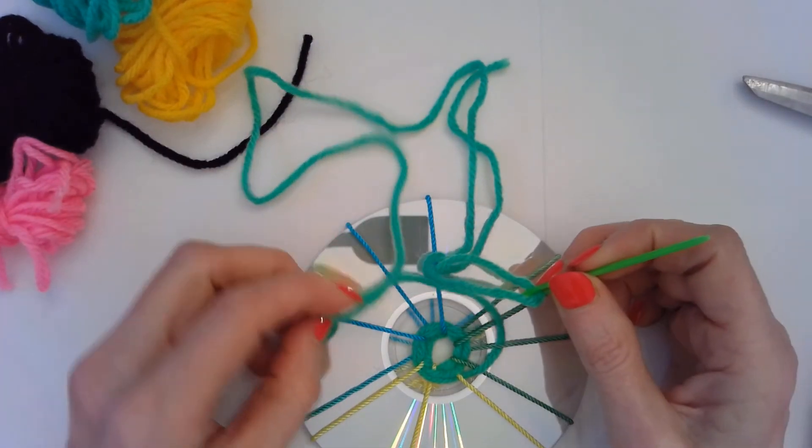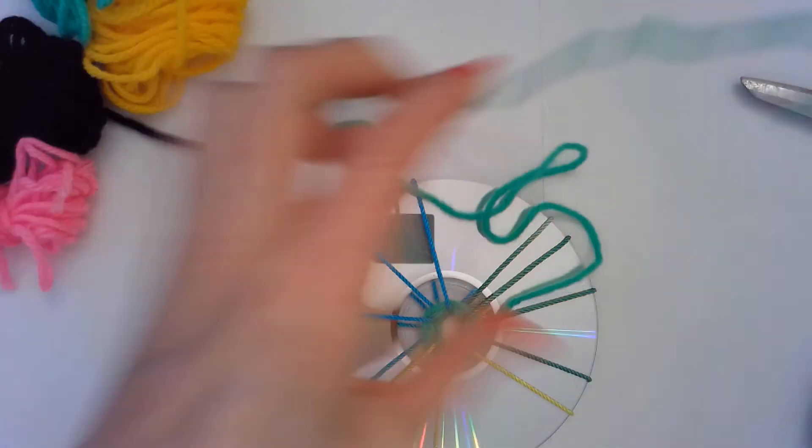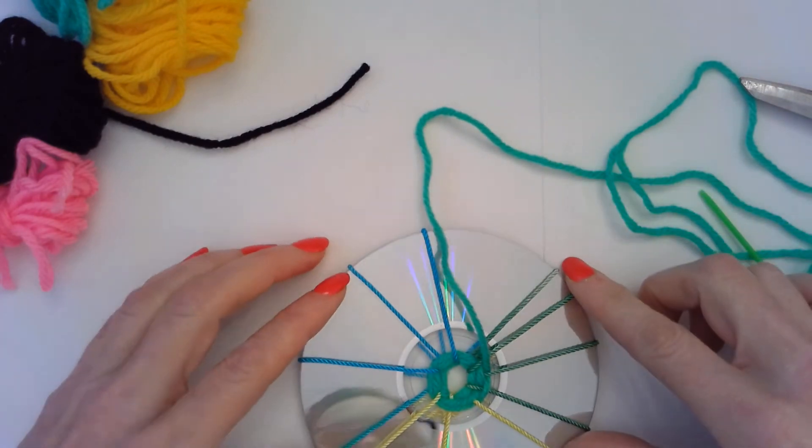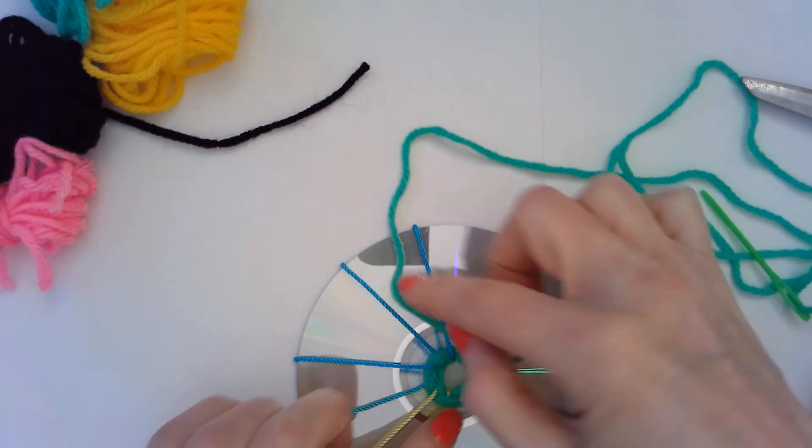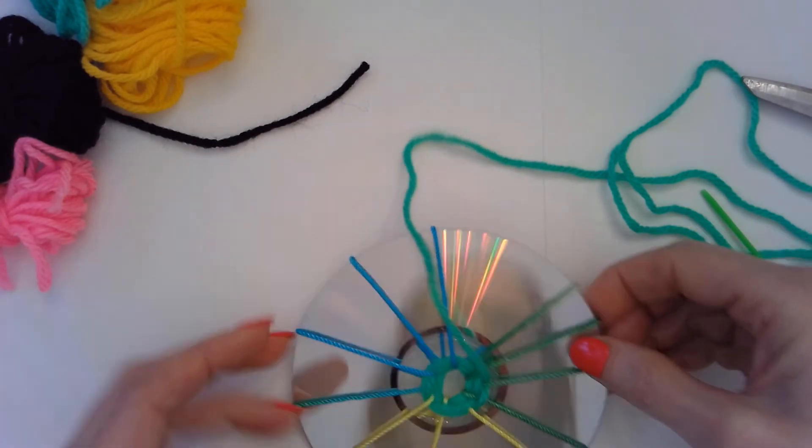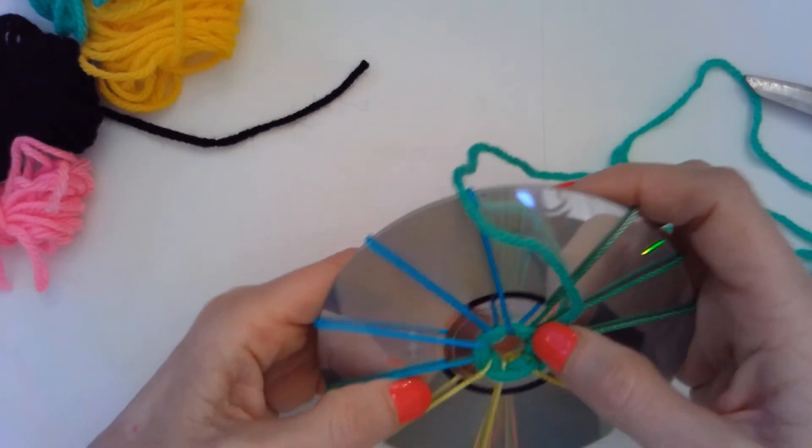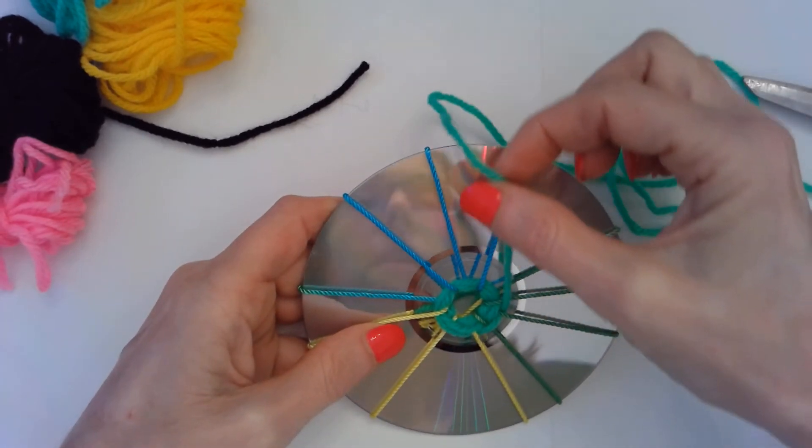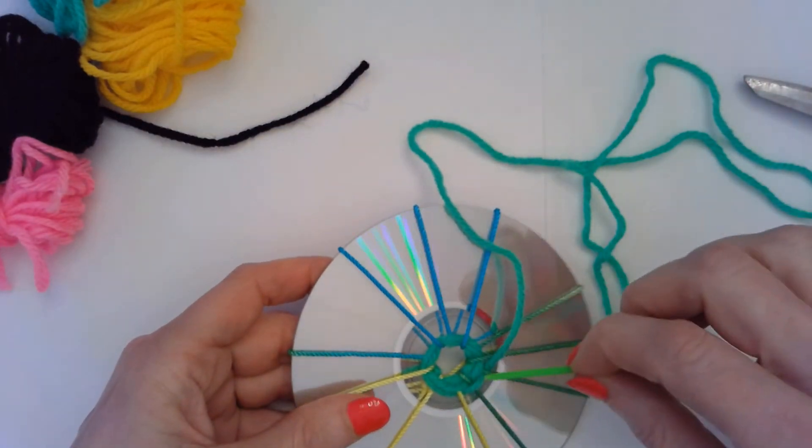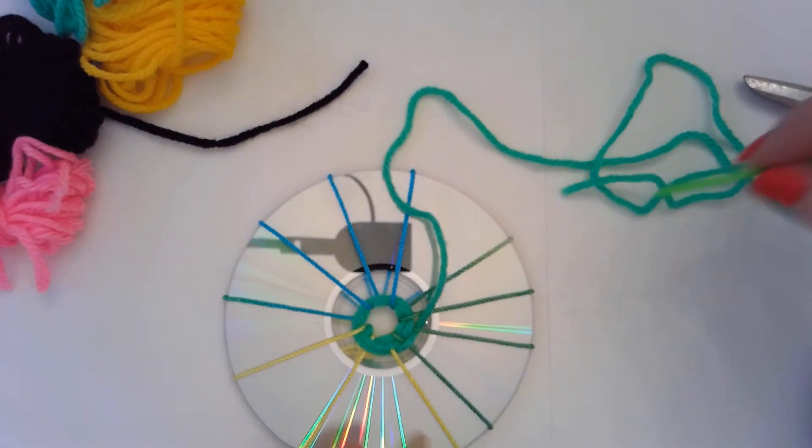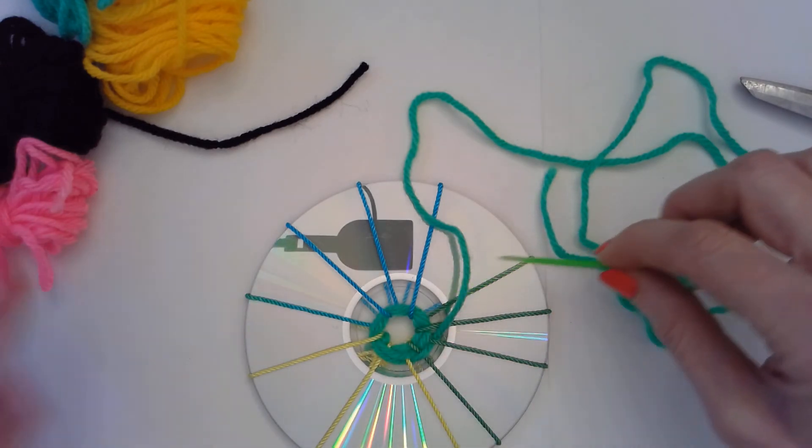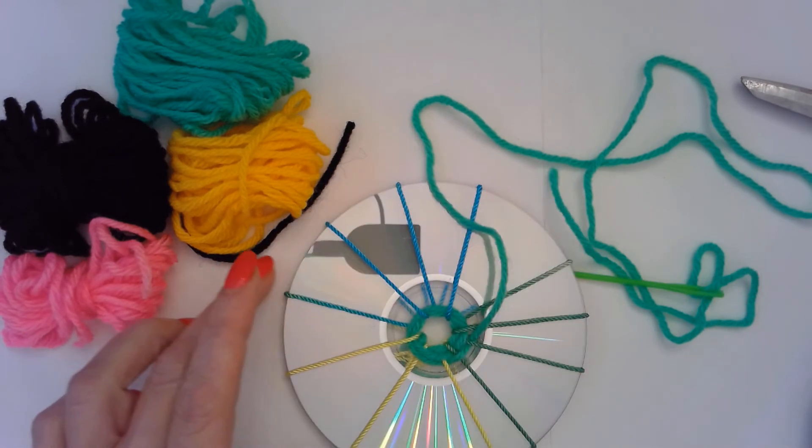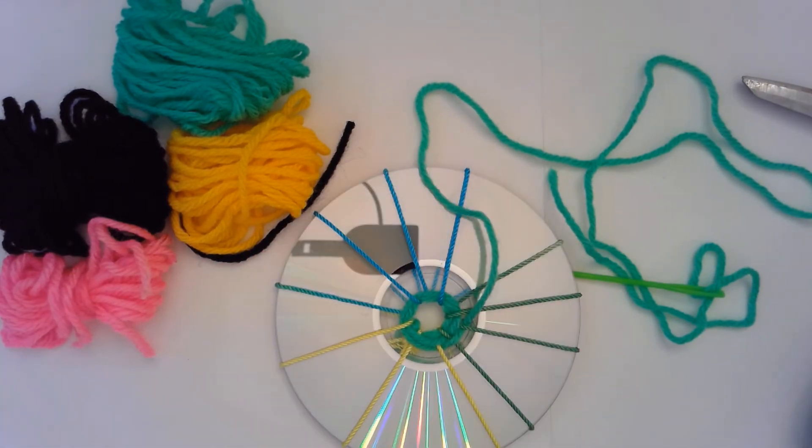And then when you're ready to switch to a new color you don't have to knot anything, just go to the end, let the string hang out a little bit. What will happen is in the end we will tuck all those strings into there. So if you like you could do like three rows of one color, you could switch up your colors as much as you want or you could have giant bands of color but you should have enough yarn to complete this. So I would just keep going.